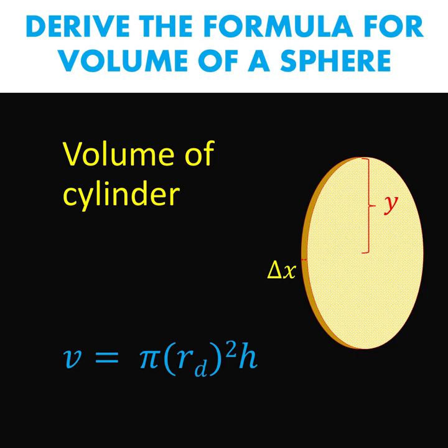And our height is this delta x, or the thickness of our cylinder. But in our notation, the radius of the disk is denoted as y. And the height of our cylinder is equivalent to our delta x, which is the thickness of the cylinder, or the height of the cylinder.